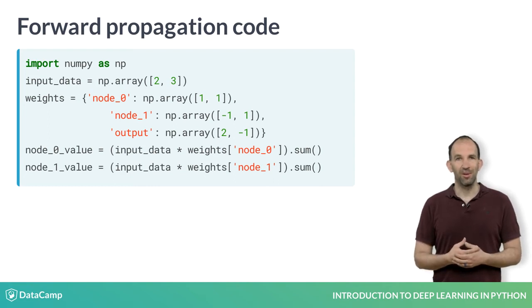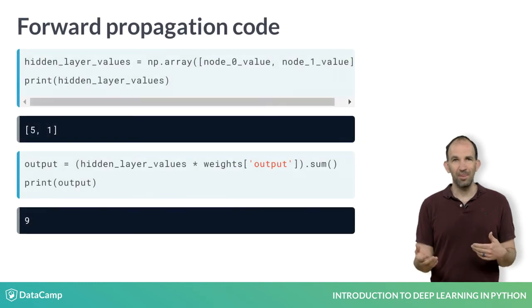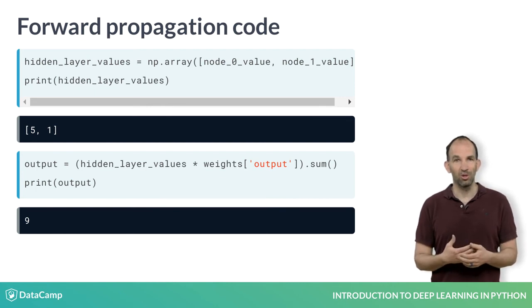We then do the same thing for the bottom node of the hidden layer, which is called node 1. Now both node 0 and node 1 have numeric values. To simplify multiplication, we put those in an array here. If we print out the array, we confirm that those are the values from the hidden layer you saw a moment ago. It can also be instructive to verify this with pen and paper.